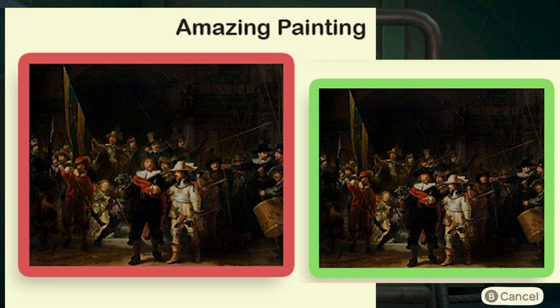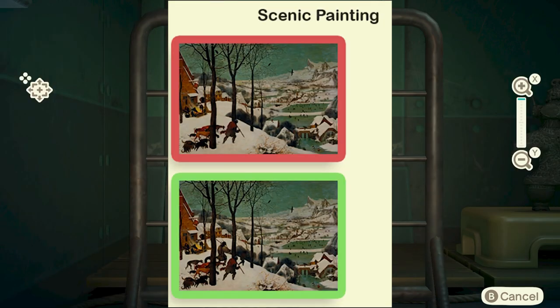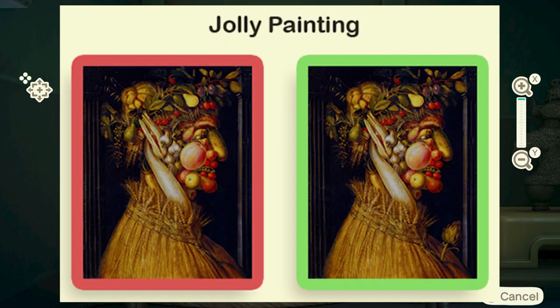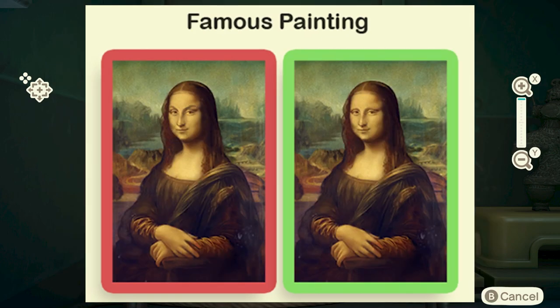In the scenic painting, the fake version will only have one person with the dogs or animals, and the real one will have more people and more animals too. In the jolly painting, the fake one will not have that little flower thing bursting from the chest, where the real one has that little detail sticking out of the person's chest. Looking at the famous painting — the Mona Lisa — the tell for the fake one is the eyebrows: they look very aggressive on the fake one but very normal on the original.